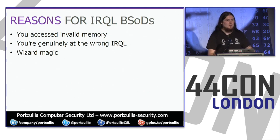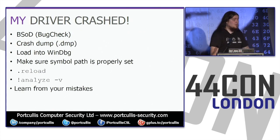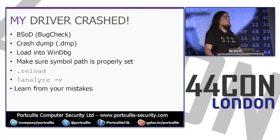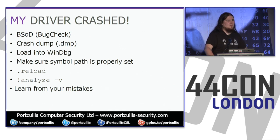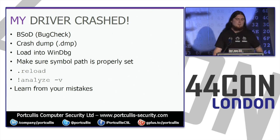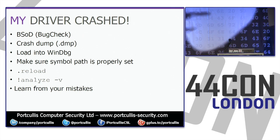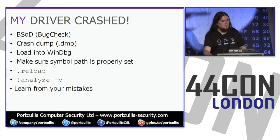Or sometimes you just get these for no reason — wizard magic. If your driver does crash, you get a BSOD — officially a bug check — you get a crash dump .dmp file, which you load into WinDbg. Make sure your symbol path is properly set. If you compiled a driver, you have the symbols for it, which means when debugging you can see the source of your driver and step through it in real time, just like debugging it in real life. The .reload function in WinDbg is really useful — if you forget to set your symbols or set them to the wrong place, type .reload and it reloads your full set of symbols.